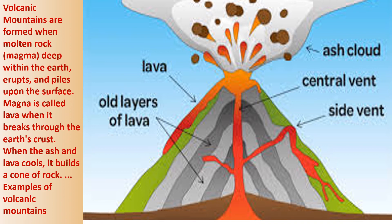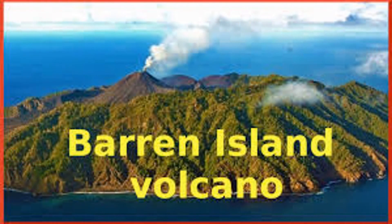The next kind of mountains are volcanic mountains. Volcanic mountains are formed when hot molten magma found deep inside the earth erupts through openings or vents in the crust and piles up on the surface. This magma is called lava when it breaks through the earth's crust. When the ash and lava cool, they build a cone of rock, and rock and lava pile up layer by layer, often forming a mountain. Examples include Mount Fuji in Japan, Mount Vesuvius in Italy, and Mount Pelée in the Caribbean islands.